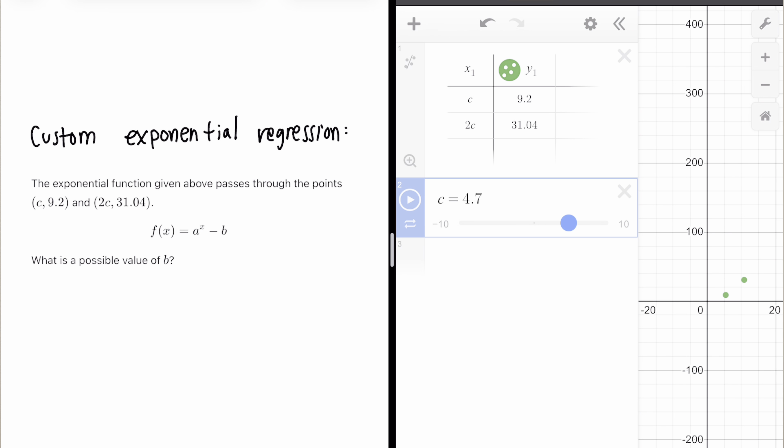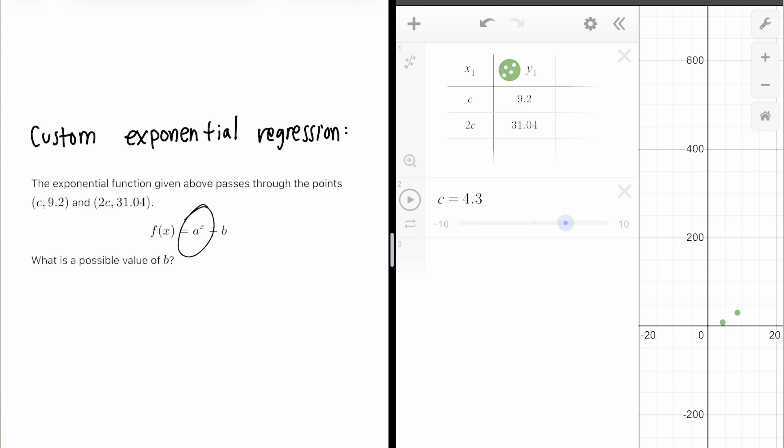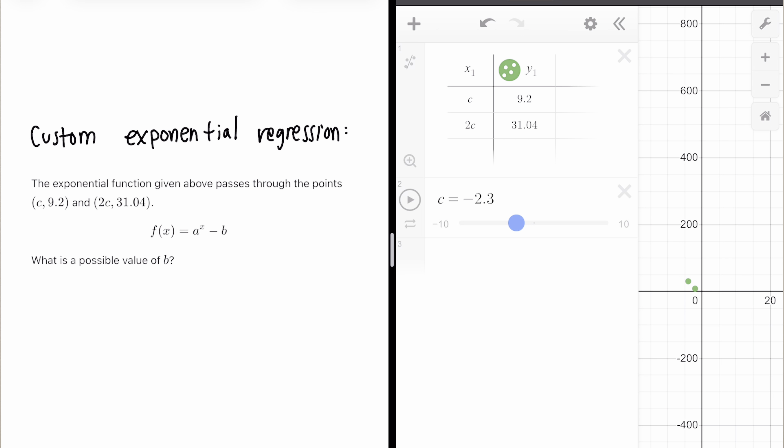Perfect. So now we have a slider for C. As you can see, the points are moving around. Now, since this is an exponential function, because we know it's A to the power of X, we can see that when C is negative, this is exponential decay. When C is positive, this exponential growth. Just something to consider.